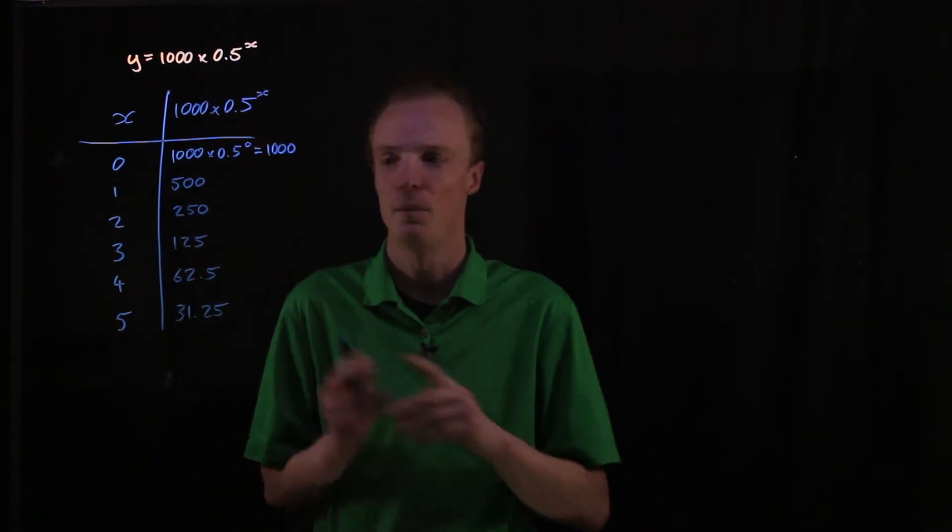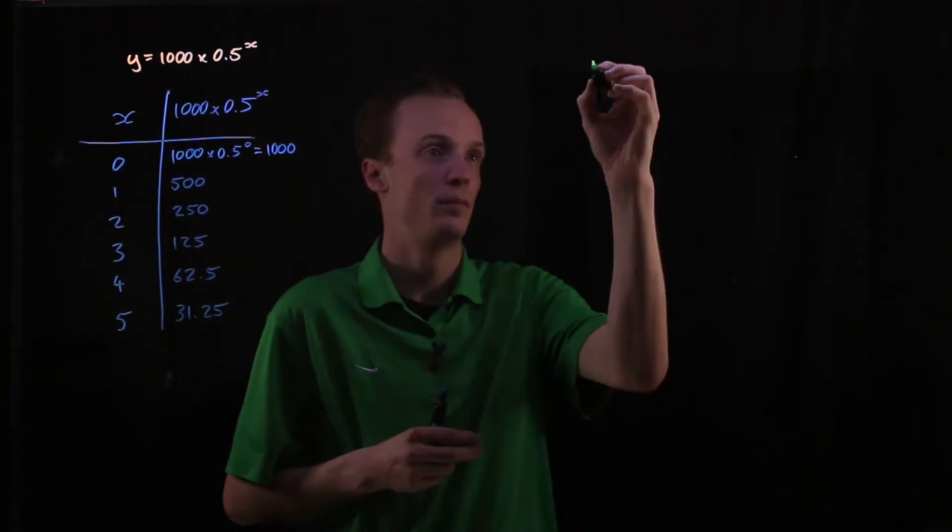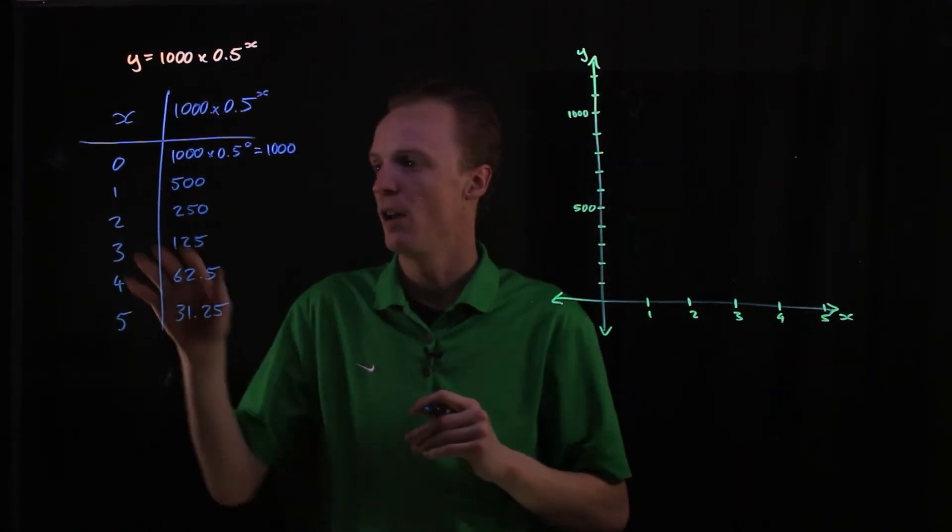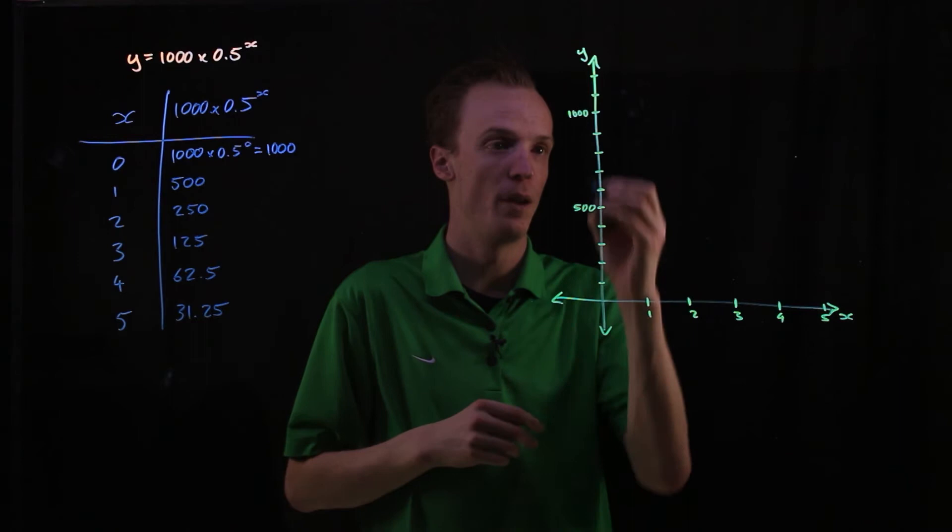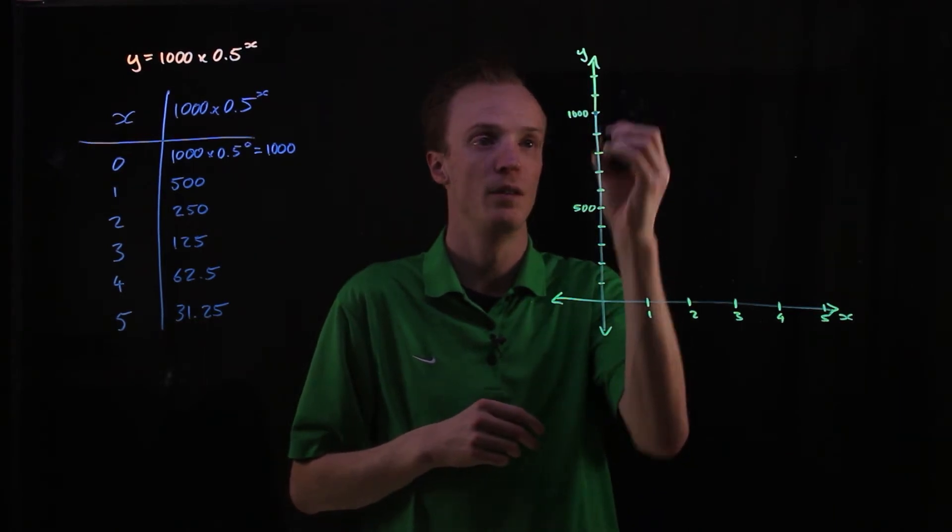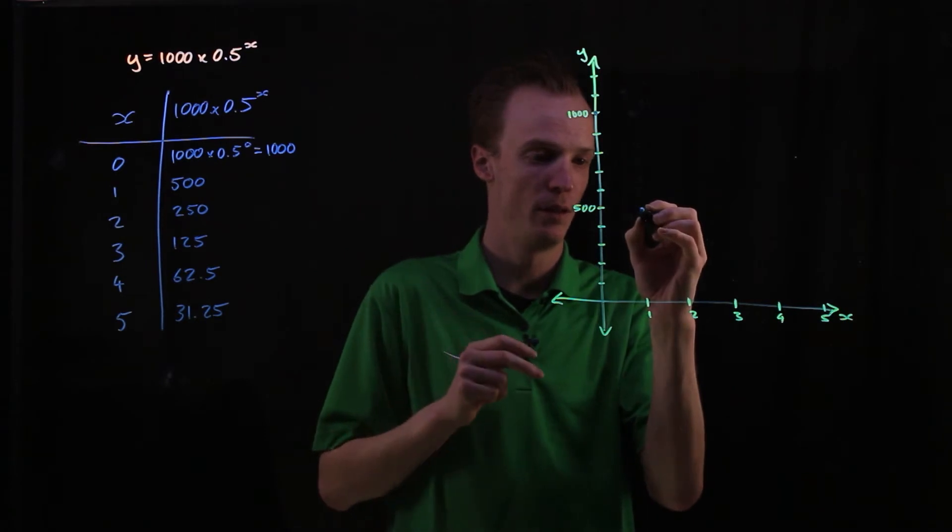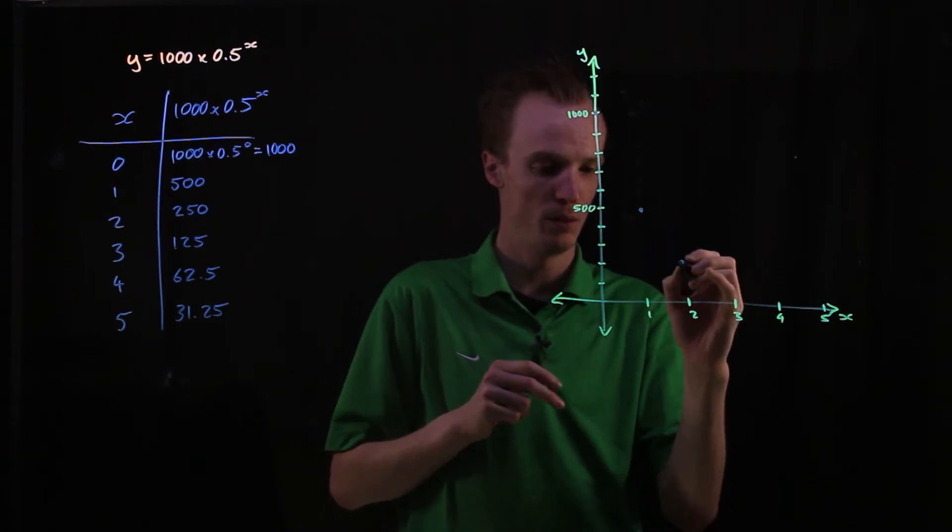So let's go ahead now and put these onto a graph. Alright so after 0 it was at 1000. At 1 it was at 500. At 2 it was at 250.